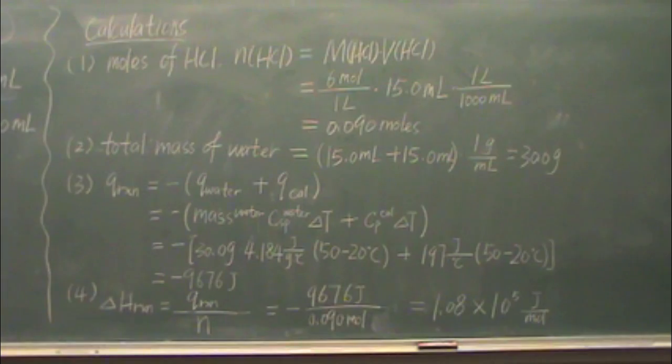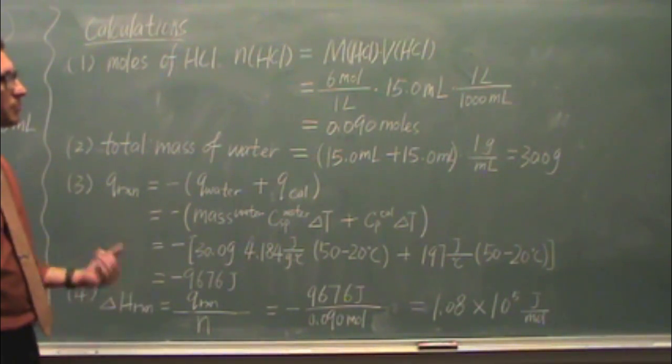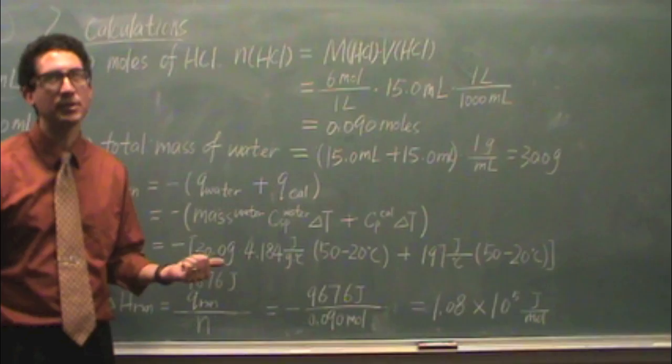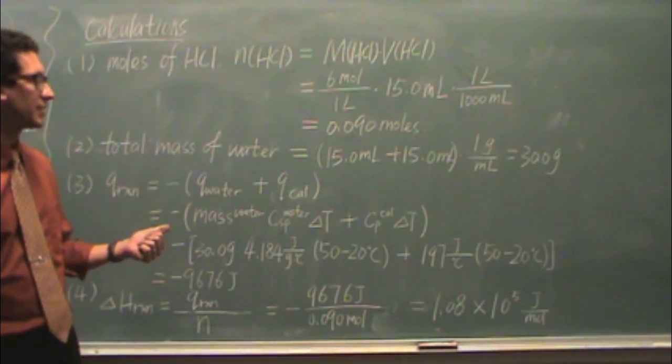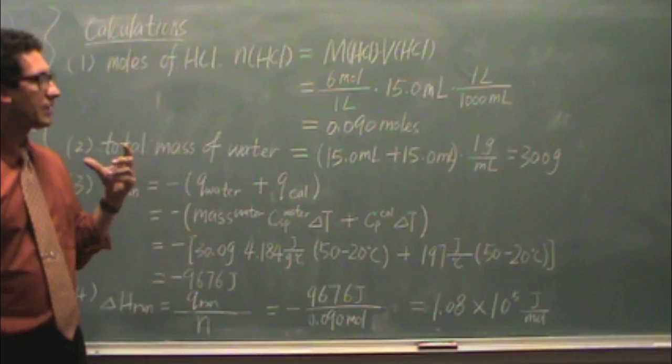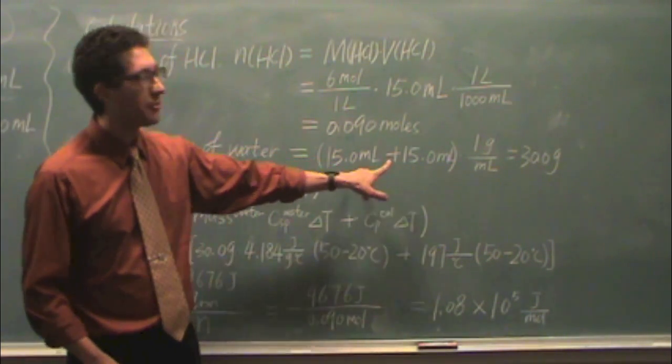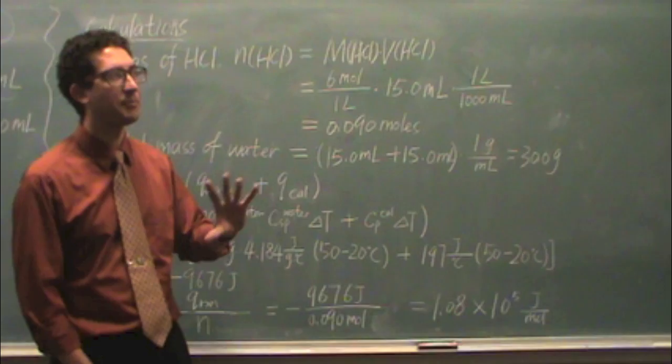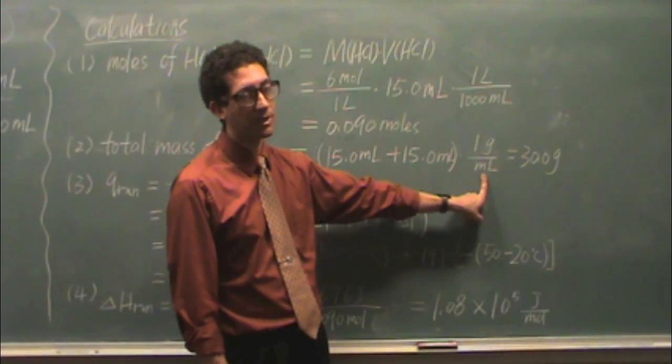We also need the total mass of water in this particular calculation. If you remember from before there's 15 milliliters of the sodium hydroxide, 15 milliliters of the HCl. That's going to contribute for a total of 30 milliliters. We're assuming that the density of both of those are near the density of water.